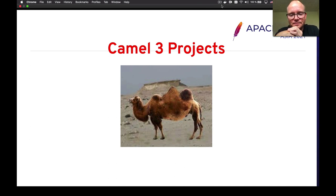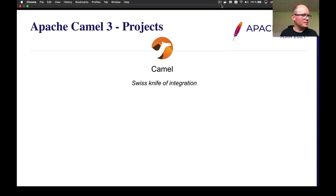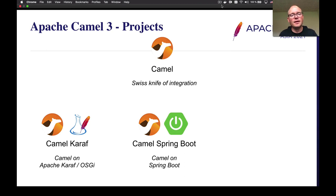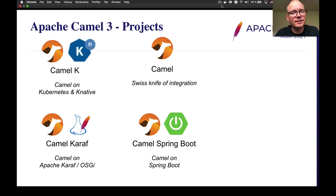What we've been doing in the latest big version, Camel 3, is to go from a monolithic product to sub-projects. The core product is the Swiss knife of integration — the foundation for everything. Then you have Camel on Spring Boot, with great integration for the many people using it. If you're using OSGi, we have the Camel Karaf product for OSGi runtimes. And Camel K is one of the newer products introduced in Camel 3, to run Camel serverless on Kubernetes — Nicola is going to talk about that.